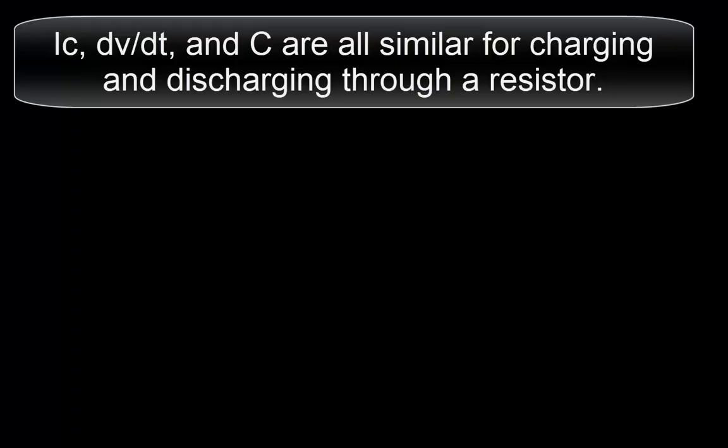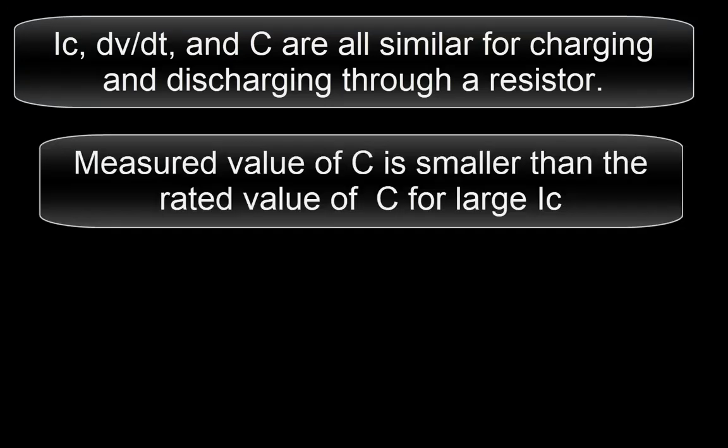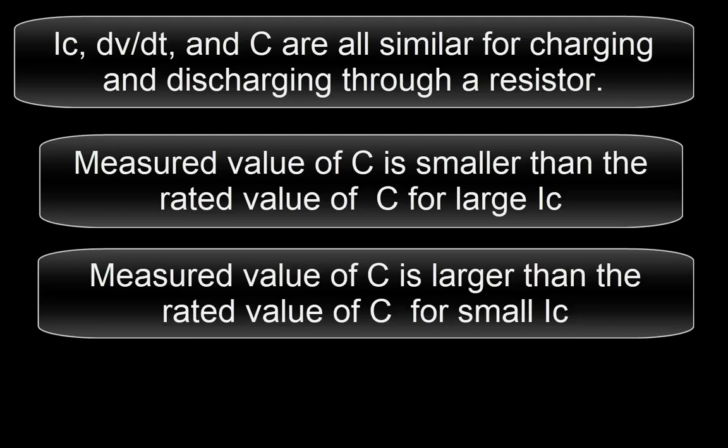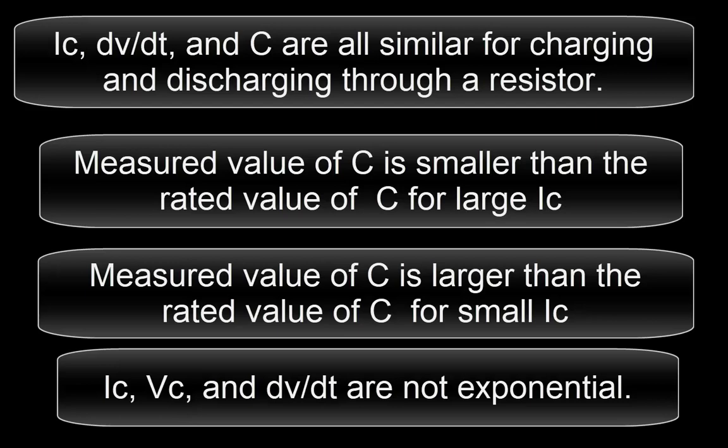IC, dVDT and C are all similar for charging and discharging through a resistor. Measured value of C is smaller than the rated value of C for large IC. IC, VC and dVDT are not exponential.